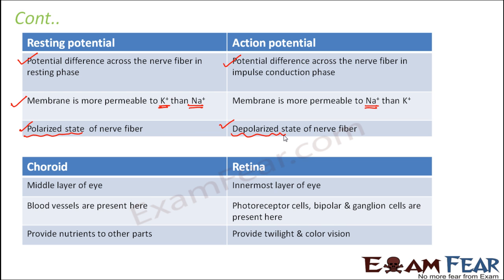Next is choroid and retina. Choroid is the middle layer of the eye and retina is the innermost layer. In the choroid, blood vessels are present, and that is why it provides nutrients to other parts of the eye. But the retina is where the image is formed — it consists of photoreceptor cells, bipolar cells, and ganglion cells, and it helps us to see things. It provides twilight vision, which is provided by the rods, and also color vision, which is provided by the cones.